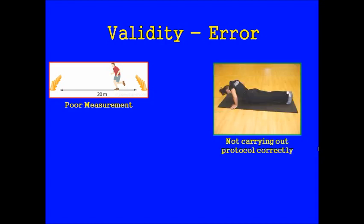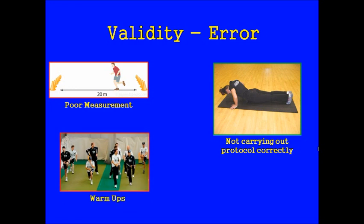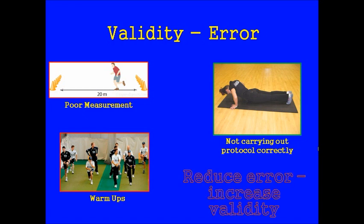Another example is whether we don't carry the protocol out correctly. The one-minute press-up test requires as many good form press-ups as possible in one minute, but if your tester doesn't check your press-ups and you do some bad form press-ups, you might score a really high result that isn't true. Another example is having a warm-up or not. Warm-ups are important from a safety aspect, but also ensure muscles are working at optimum speed and strength. If a tester doesn't give their client a warm-up, the client will score a poorer result and the test will not be valid. So it's really important that we try to cut out any sources of error, which increases the validity and accuracy of our testing.